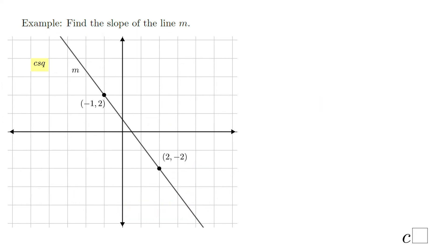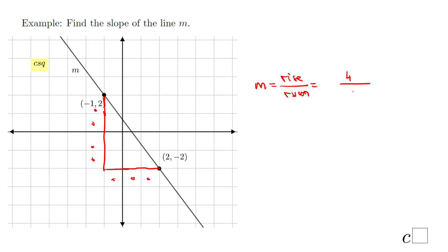One more example using rise over run. Drawing the slope triangle and counting: the rise is 1, 2, 3, 4 — that is 4. And the run is 1, 2, 3. Be careful: this line is going down from left to right, so you put a minus sign. Also check if you can simplify — in this case we cannot. So the slope is negative 4 over 3.